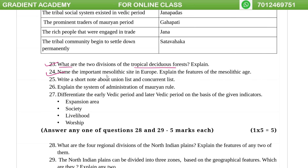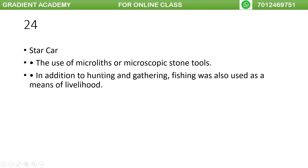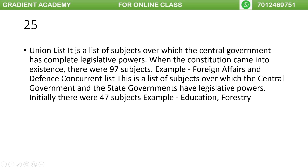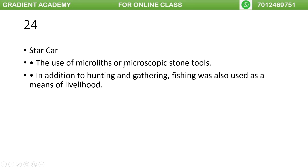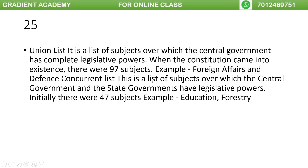Name the important Mesolithic site in Europe and explain its features. The important Mesolithic site uses microscopic stone tools called microliths. Fishing was also practiced during this period.